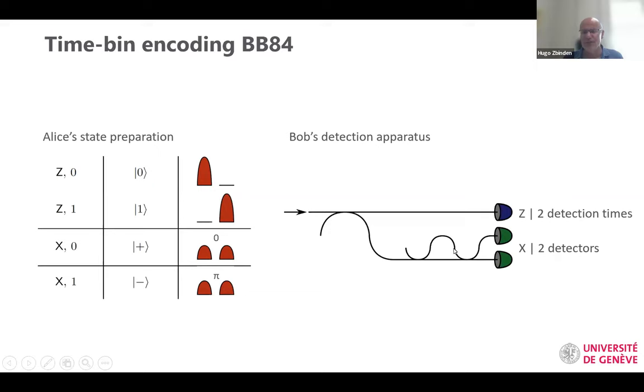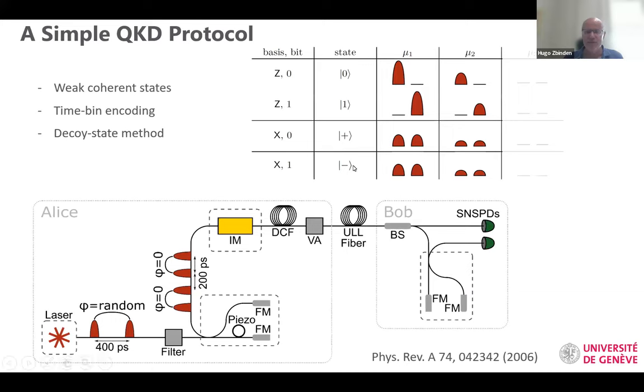We don't use this X basis in order to distribute key. We could do this as well, but in our case, we use essentially the Z basis, and from time to time, we measure in X basis. In the BB84 protocol, you have different bases, zero and pi. In our case, we make that a bit simpler. We have these different states, but we don't use this because we don't use the X basis to generate key. We just use one of these states. We have only three different states: plus, zero, one, and plus. That's enough to generate the key.